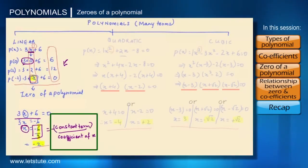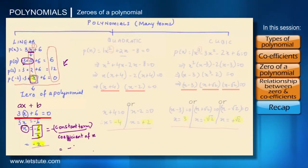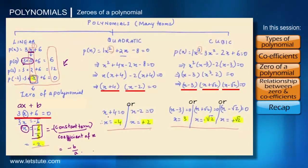With the help of this relationship, we can just look at any linear polynomial given and state what are the zeros. So if we have any linear polynomial that is of the form ax plus b, the relation would be minus b upon a. So how do you find zeros for any linear polynomial?